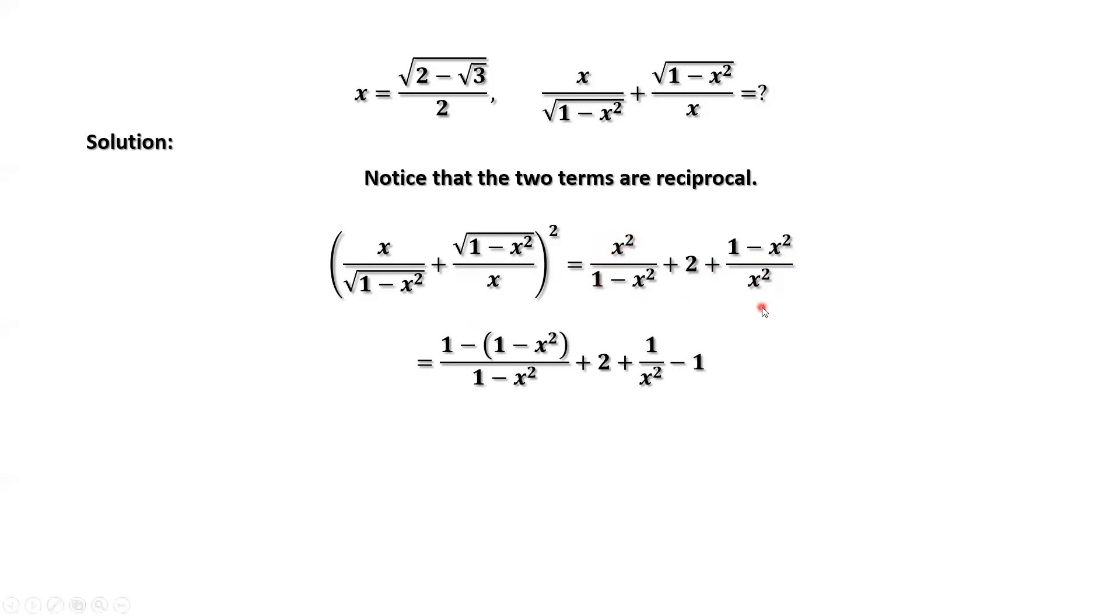Simplify the right-hand side. And add 1 on the numerator of the first term and minus 1 at the same time. The purpose is to simplify this part. Then we have 1 divided by 1 minus x squared minus 1 minus x squared divided by 1 minus x squared, which is 1. We have 2 here. And we have 1 over x squared here and minus 1. Continue to simplify this part. We have 1 over 1 minus x squared plus 1 over x squared.